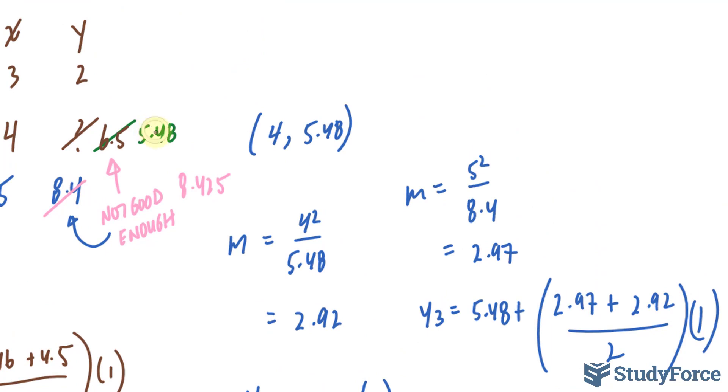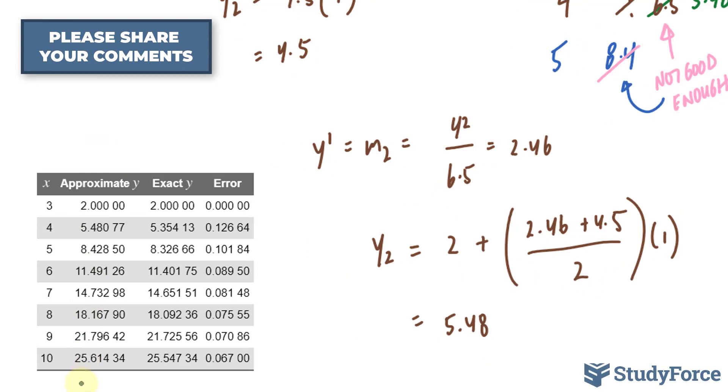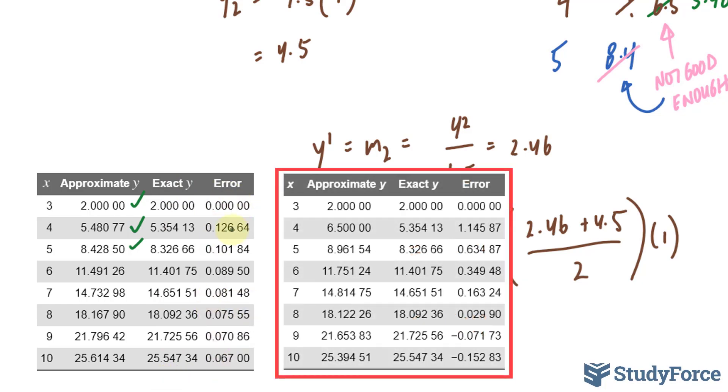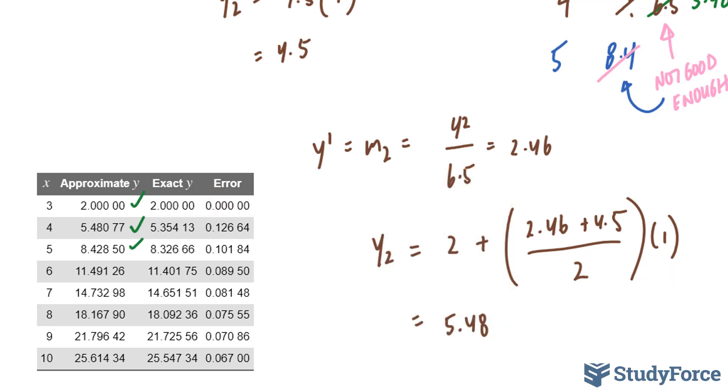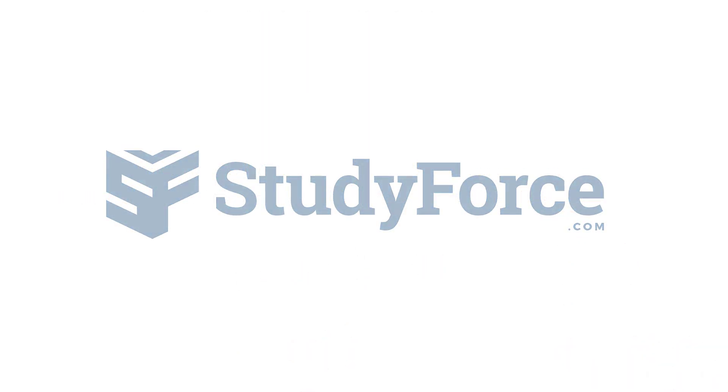So far we have three points and two corrections. If you do this up until x = 10, you should end up with a table that looks like this. Notice that the second column shows the approximate y's, and we found these already: the 2, the 5.48, and the 8.425. If you keep doing this, you end up with 25.61. We do have the exact y coordinates for this differential equation shown here. Notice that the errors are very small in comparison to the original Euler's method. That is how to use the modified Euler's method with predictor-corrector steps.